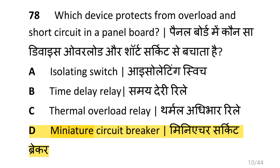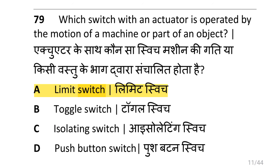Which device protects from overload and short circuit in a panel board? i.e. miniature circuit breaker. Which switch with an actuator is operated by the motion of a machine or part of an object? i.e. limit switch.